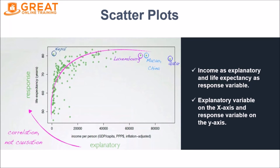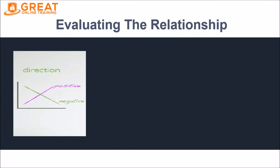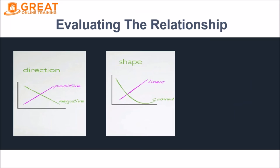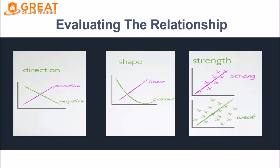When evaluating the relationship in a scatter plot, there are four things to consider: the direction of the relationship, the shape — whether it is linear or curved, the strength — whether data points are strongly clustered or widely scattered indicating a weak relation, and the presence of outliers. Correlation versus causation will be covered in future lectures, along with computing the measure of correlation in R.